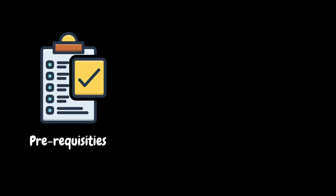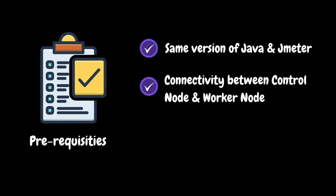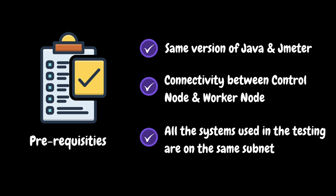Next, we will look at some of the prerequisites for distributed load testing. We need to make sure to use the same version of JMeter and Java on both the control node and worker nodes — mixing different versions will not work correctly. We also need to ensure that there is connectivity between the control node and worker nodes. If there are any firewall rules in place, we need to work with the network teams to allow communication between the control node and worker nodes.